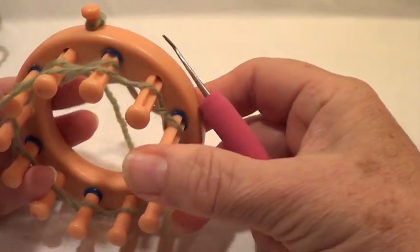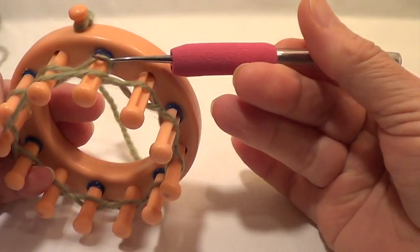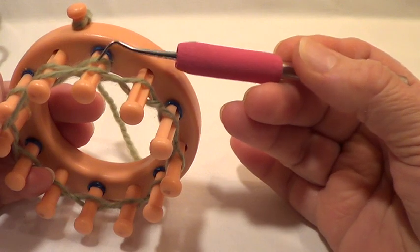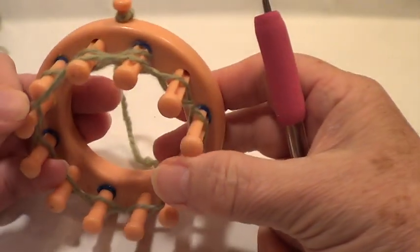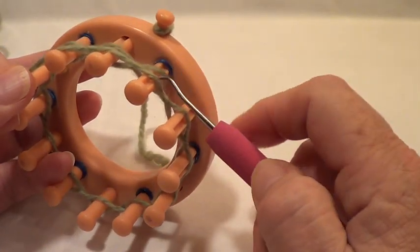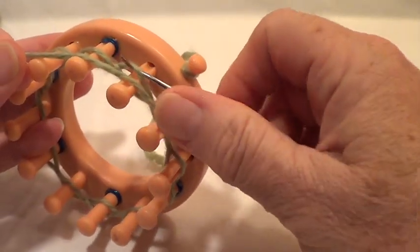Now when you get to peg 12, you have this yarn that's coming up from the slip knot that's on peg 12. Do not knit this strand off at this time—it will be knit off on the first row. So just yarn over with the working yarn on peg 12 and then continue on to the first row.